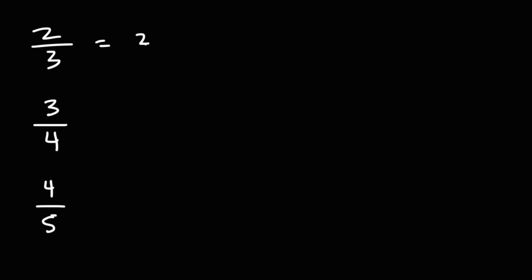Go ahead and convert these fractions to decimals without using long division and without using a calculator. Now 2 over 3 is basically 2 times 1 over 3. And we know that 1 over 3 is 0.3 repeating. That's on our list. So 2 times 3 is 6. So this is going to be 0.6 repeating.